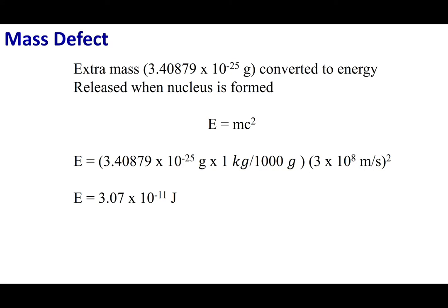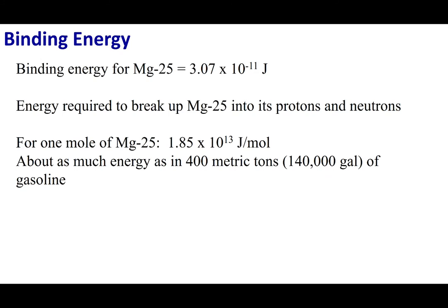When we put these subatomic particles together, we're converting some of that mass into energy. We can apply this equation, take the mass defect from our previous slide, do a little unit conversion, and multiply by the speed of light squared. The energy released when we form the nucleus is called the binding energy — this is the reason protons and neutrons come together, and it represents a release of a tremendous amount of energy.